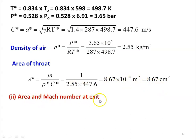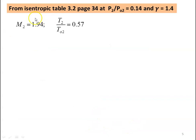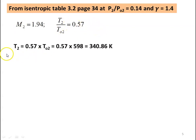Now, area and Mach number at the exit. Pressure ratio at the exit: P2 by P02 equal to 0.98 divided by 6.91 equal to 0.14. From the isentropic table, table number 3.2, page number 34, at P2 by P02 equal to 0.14 and gamma equal to 1.4, we take Mach number equal to 1.94 and T2 by T02 equal to 0.57. So the temperature at the exit of the nozzle: T2 equal to 0.57 into T02 which is 0.57 into 598 equal to 340.8 Kelvin.